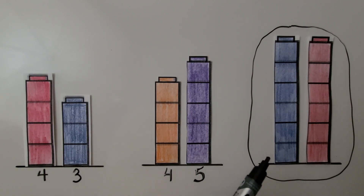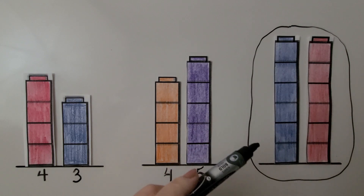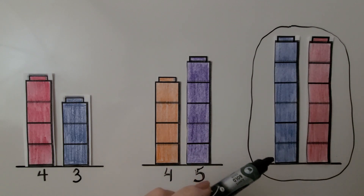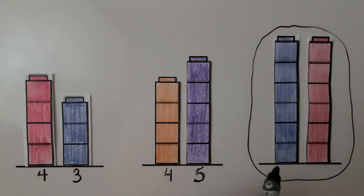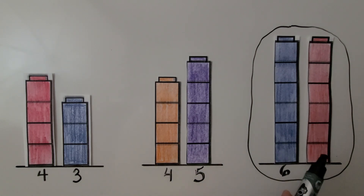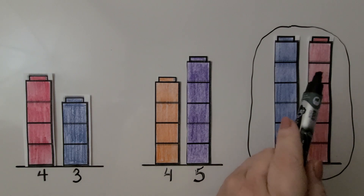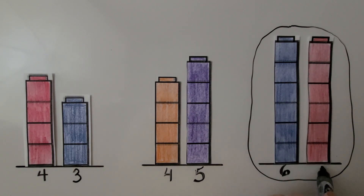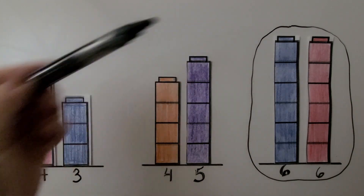For our set that has about the same height, the blue cube tower has six cubes and the red cube tower has six cubes. They have the same number of cubes and they're about the same height.